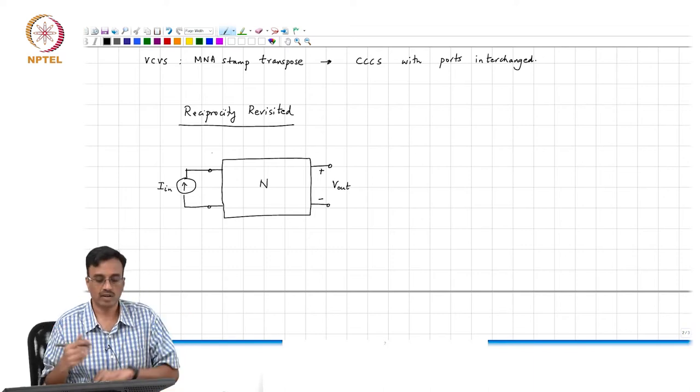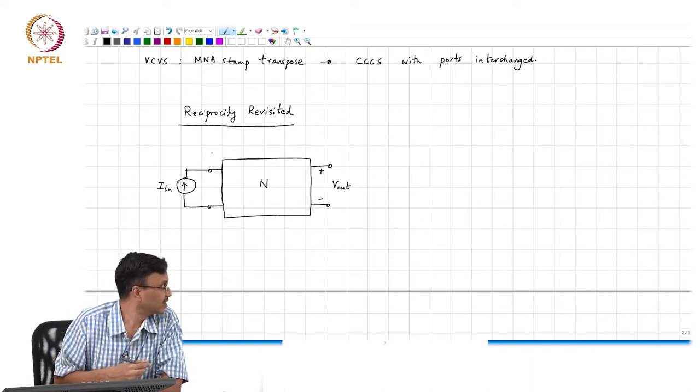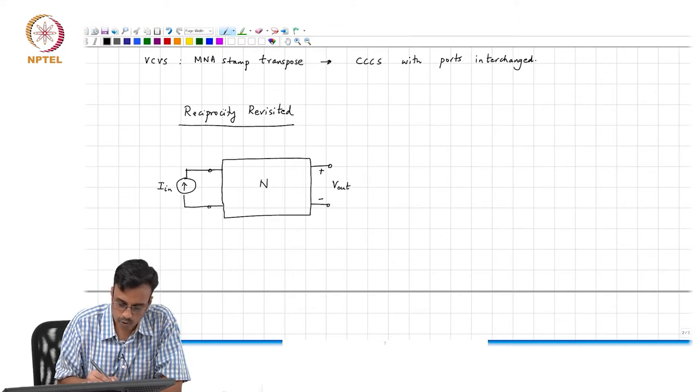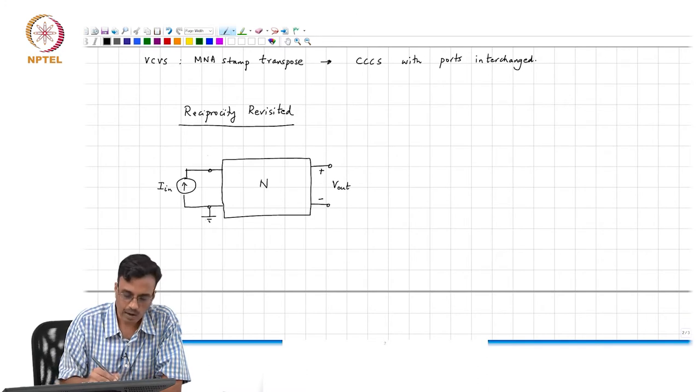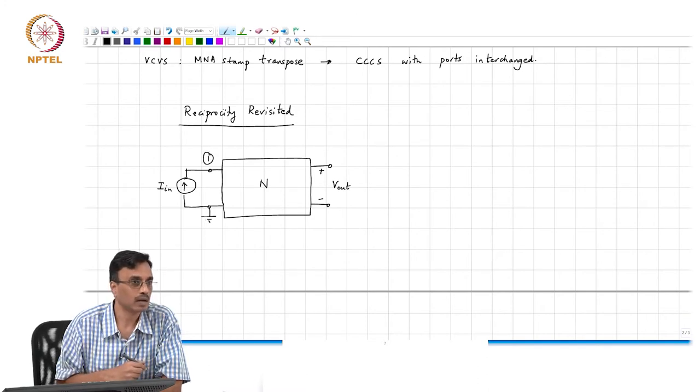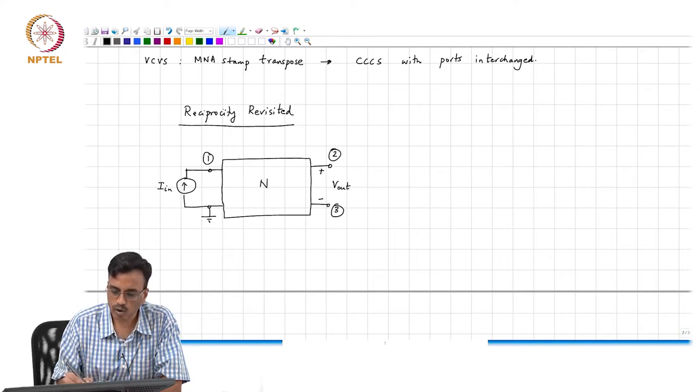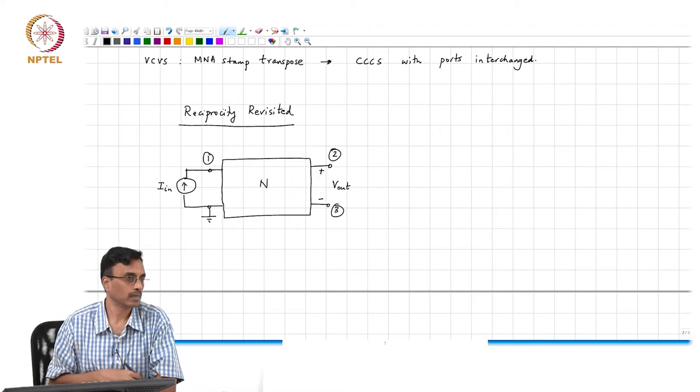This is I_in, this is the network N, and this is V_out. This network has a whole bunch of nodes, and this is a free country. So I am free to choose any node as the reference. I will call this node number 1. I will call this the node number 2 and this I will call the node number 3.